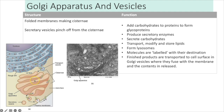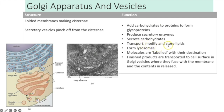The Golgi apparatus consists of curved folded membranes forming cisternae, with vesicles budding off the edges. In the Golgi, proteins are processed, packaged, and modified — for example, carbohydrates may be added to a protein to make a glycoprotein. Secretory enzymes are produced, lipids are modified and stored, lysosomes are created, and molecules may be labelled with receptors for their destination. Finished products are released in vesicles that fuse with the cell membrane and release contents by exocytosis.